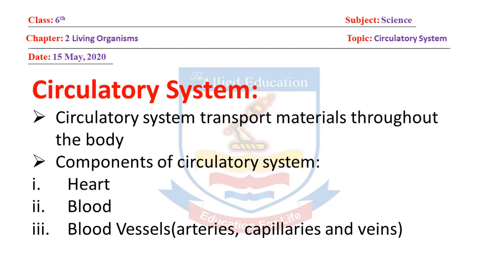So, circulatory system ek aisa organ system hai jo hamaari body mein transport ka kaam anjaam deta hai. Iske teen components hain: heart, blood aur blood vessels. Teen tarah ki blood vessels hain: arteries, capillaries aur veins.